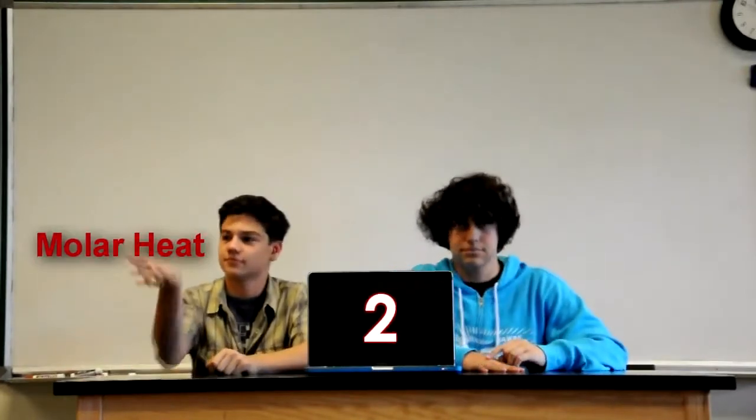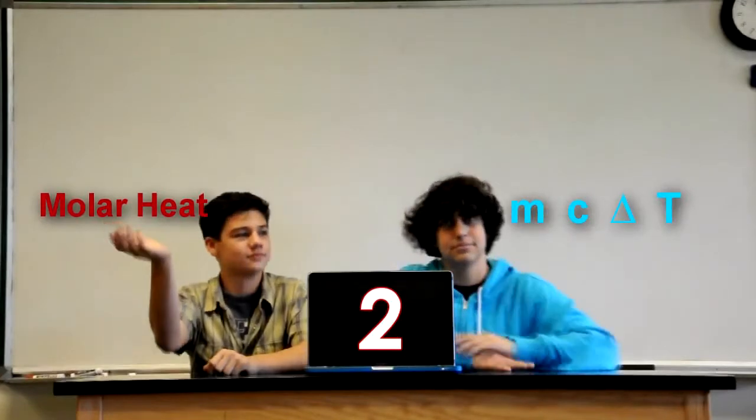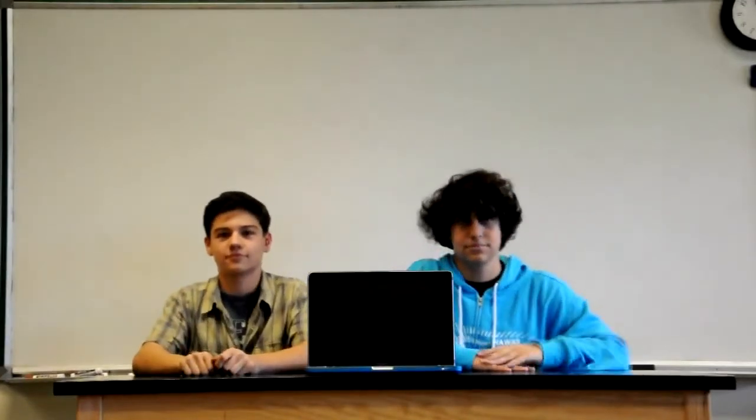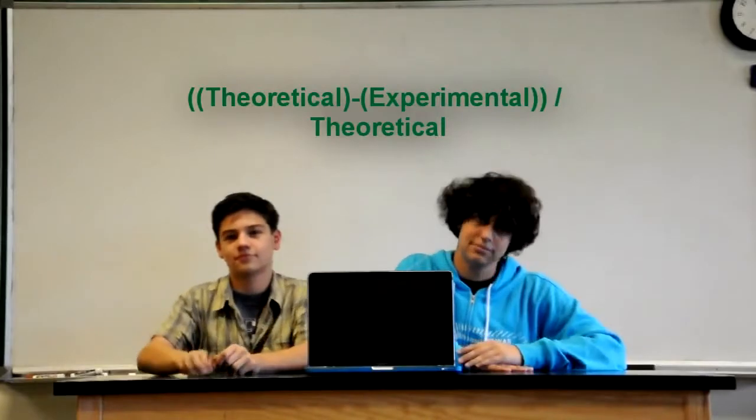Step two, find the mole of heat. Just use MC delta T. Once you gotta subtract and divide, then you get the number that lets you ride. Compare temperature and find your error. It's so easy you could be Helen Keller.